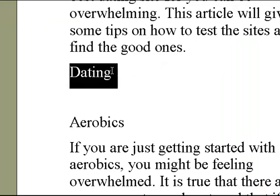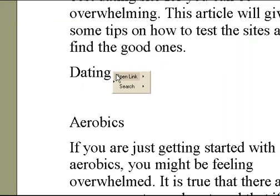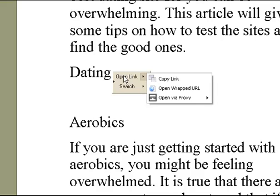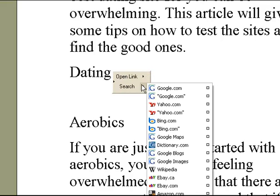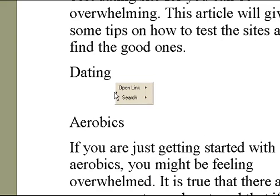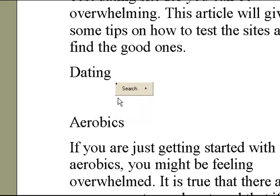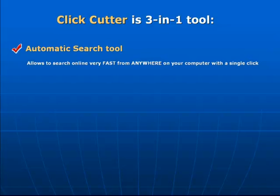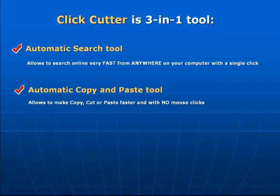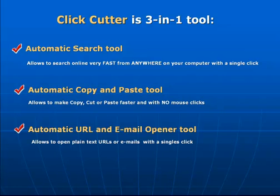The tool can also be operated with a command pop-up dialog. You can hide the buttons to make it smaller, or if you don't like its pop-up behavior, you can simply disable this dialog. The following three tools are built into Clip Cutter: the automatic search tool, the automatic copy and paste tool, and the automatic link and email opener tool. Let's take a look at each individual tool.